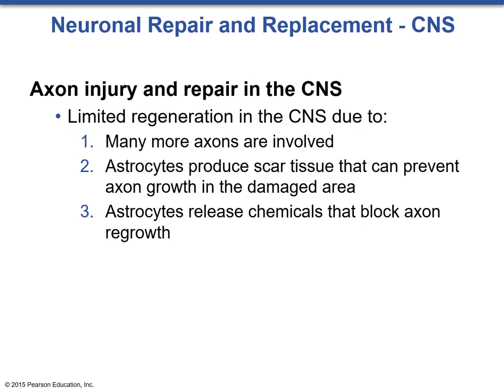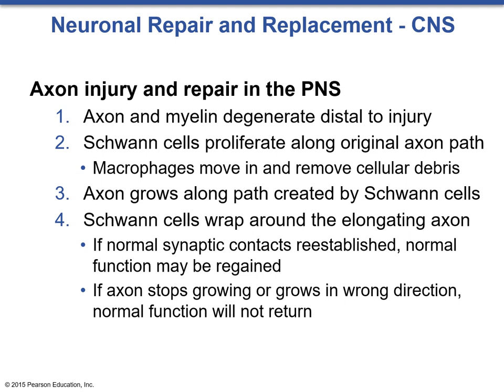In the peripheral nervous system, however, we can regenerate neurons. The four steps of neural regeneration in the PNS are: first, the axon and myelin degenerate distal to the injury; second, Schwann cells proliferate along the original axon path while macrophages clean up cellular debris; third, Schwann cells release growth factors causing the axon to regrow along the original path; and fourth, Schwann cells wrap around the elongating axon. If normal synaptic contacts are reestablished, normal function is regained; however, the axon could grow in the wrong direction or stop growing, preventing full recovery.